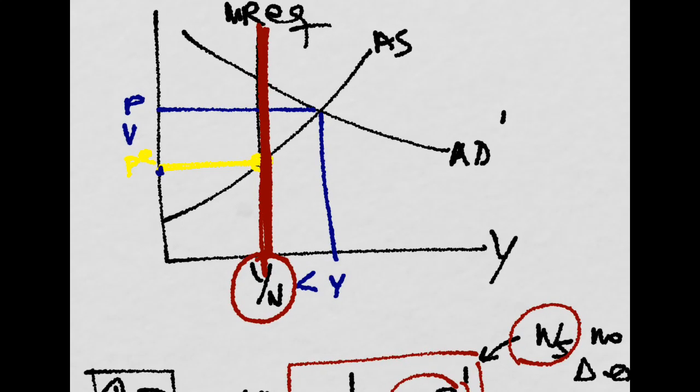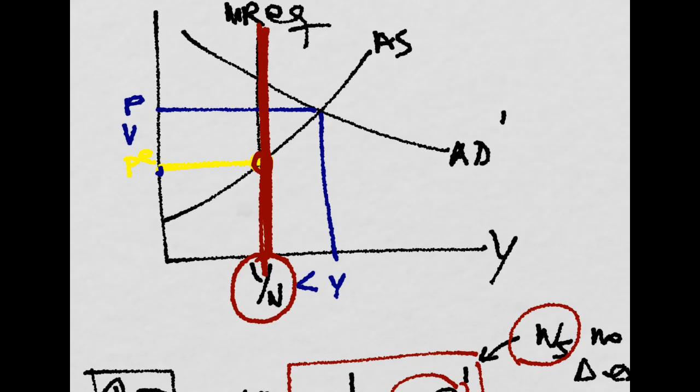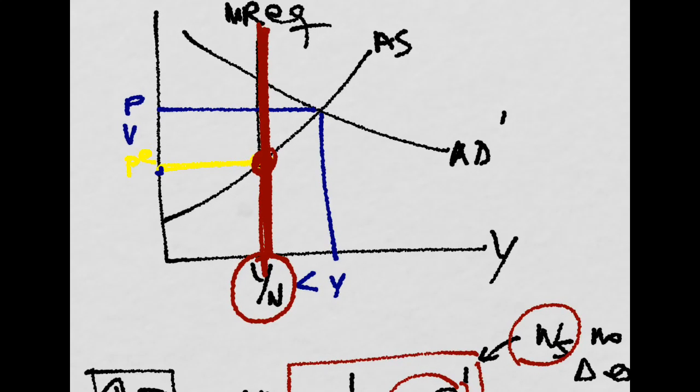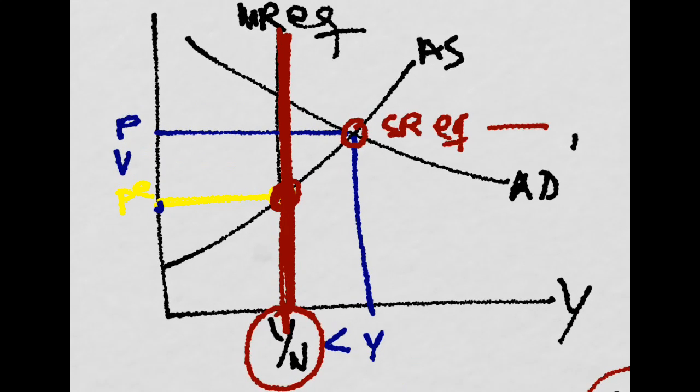But imagine that for whatever reason, aggregate supply and aggregate demand do not meet here in the medium run. They actually meet here. That is, our short run equilibrium is here.